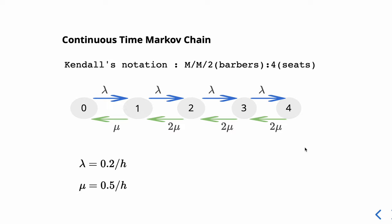Transitions from 4 to 3, 3 to 2, and 2 to 1 occur at rate 2μ, and 1 to 0 at rate μ. For the parameters, customers arrive on average every 12 minutes, so λ equals 0.2 per hour, and μ equals 0.5 per hour because the service time is 30 minutes.